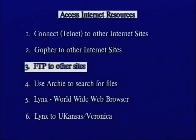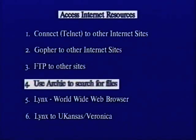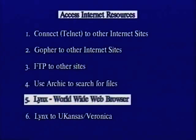After you've used Gopher to find out where information is, you use what's called FTP, or File Transfer Protocol. This is actually a way of going to that site and getting that information, bringing that file to you. Archie is a little more specific in that you have to know a particular name of a file, or at least a portion of a name. Options five and six are the same in respects, just hooked up to two different systems. And Lynx is what's called a browser — that's how you get on to what's called the World Wide Web.